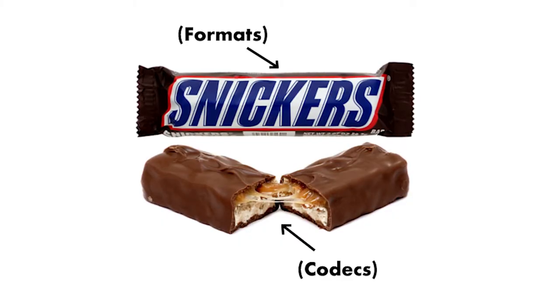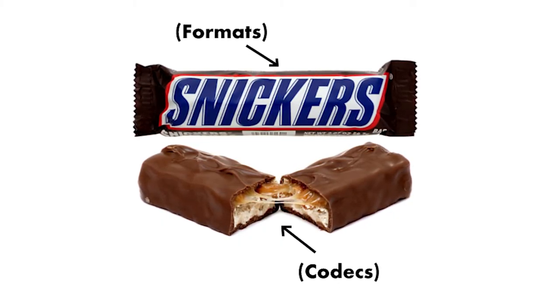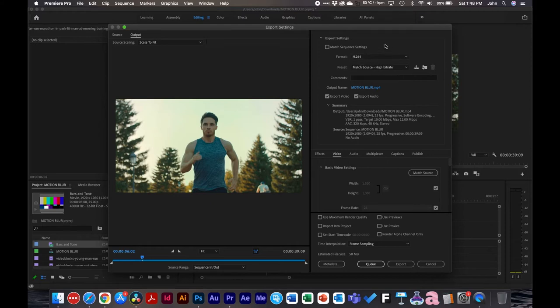Let's talk about video codecs first. Codecs and formats can get a little confusing, so I want to talk about the difference between them — like what's the difference between MP4 and H.264? You can think of the format as the wrapper for a candy bar, and the codec as what's actually inside the wrapper. Formats are the container that holds the video file, and the codec is the data or information inside.